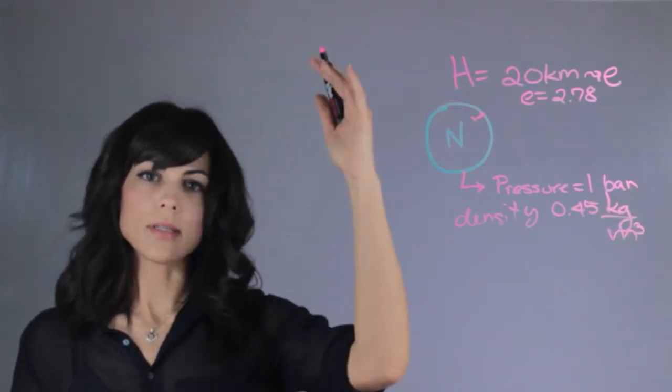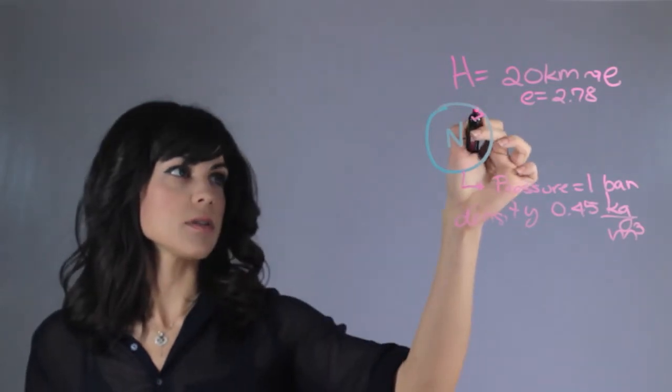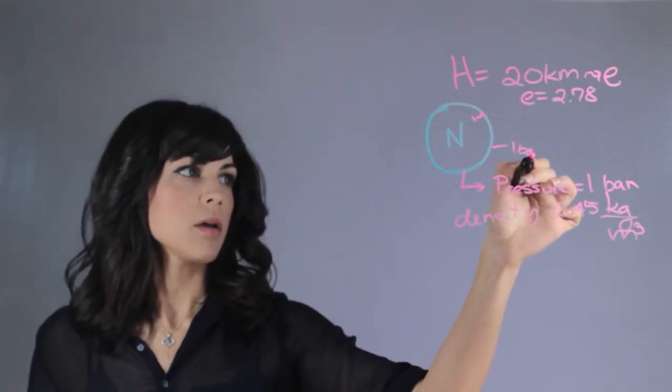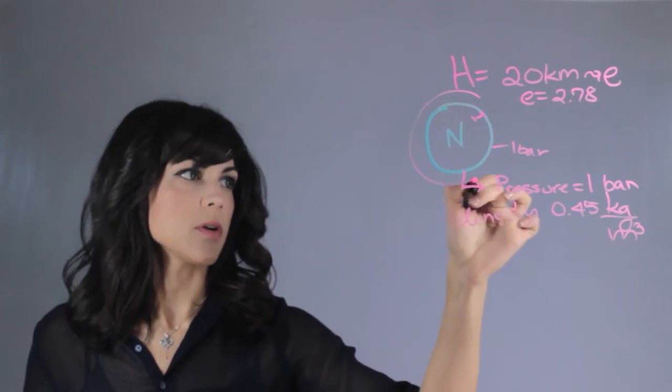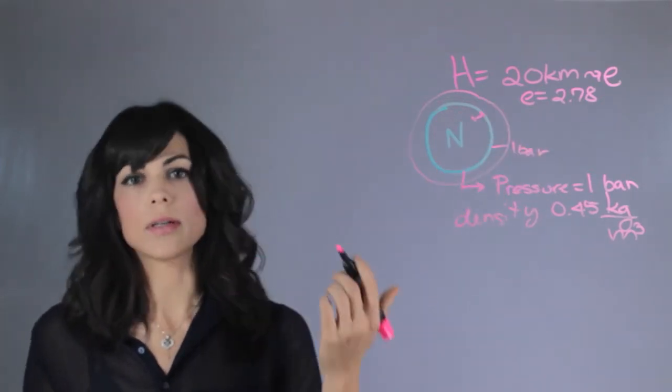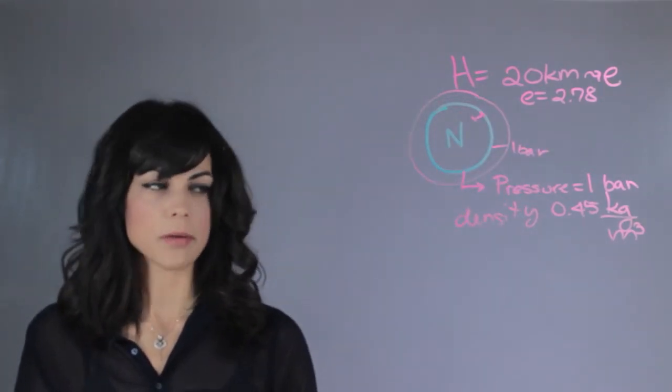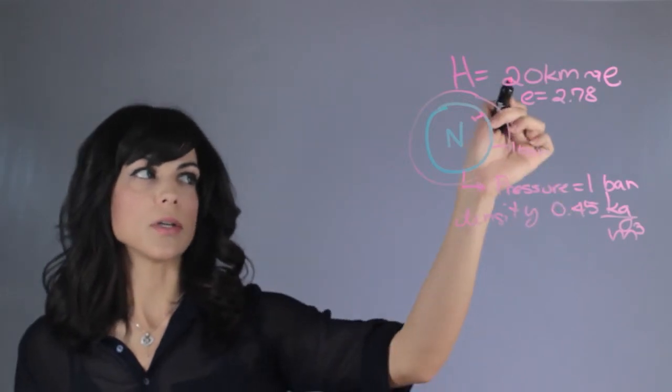And this decreases as it goes out. So here on the surface, we're at 1 bar. And when we have this atmosphere around us, it's decreasing until there's no longer an atmosphere, and it's decreasing at the rate of 20 kilometers.